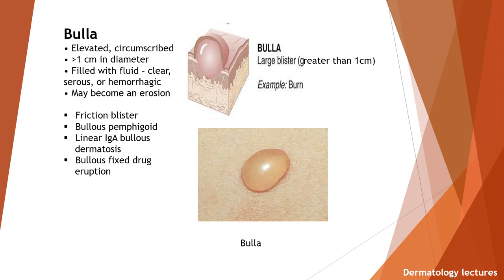Bulla. It is an elevated, circumscribed lesion greater than one centimeter in diameter, filled with fluid — clear, serous, or hemorrhagic. May become an erosion. Examples are friction blister, bullous pemphigoid, linear IgA bullous dermatosis, and bullous fixed drug eruption. Here you can see the example of a bulla.